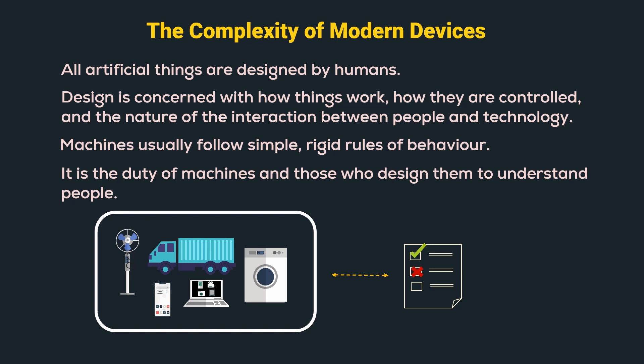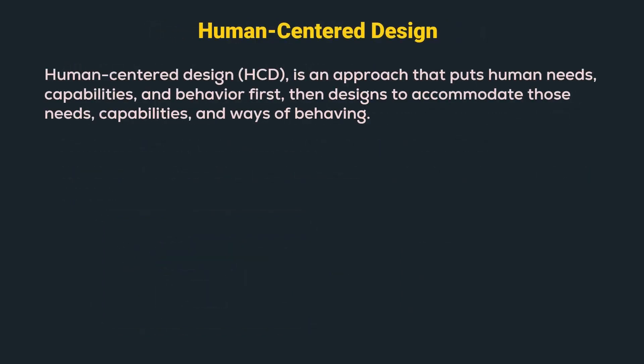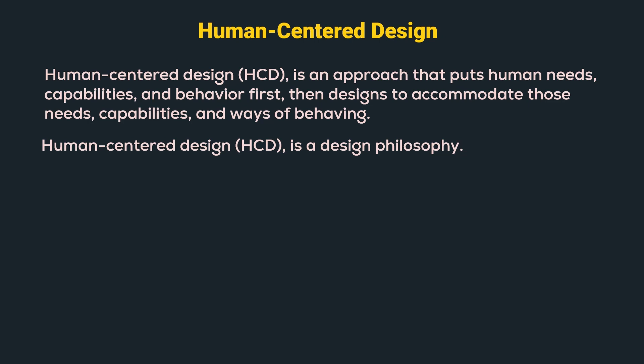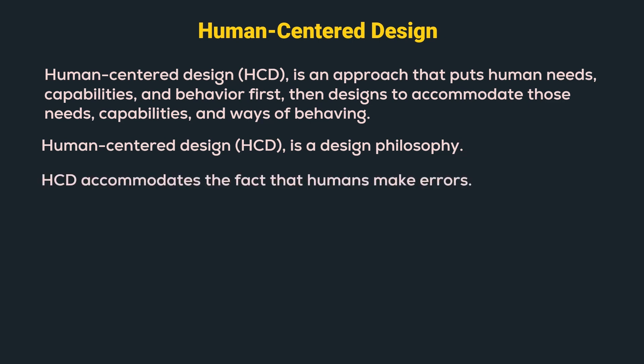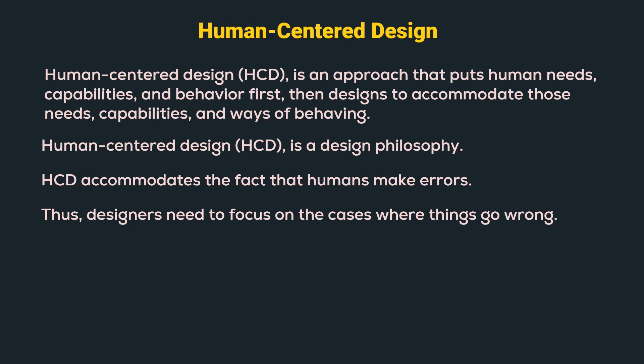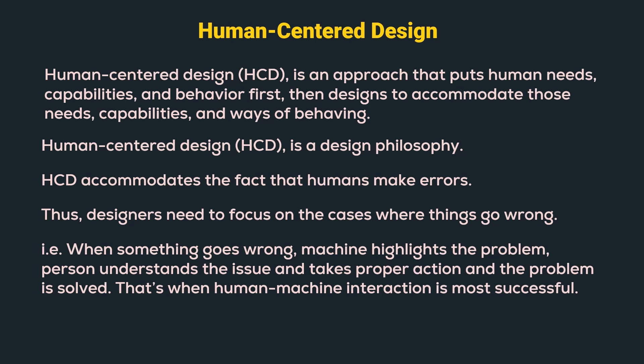Human-centered design, or HCD, is an approach that puts human needs, capabilities, and behavior first, and then designs to accommodate those needs, capabilities, and ways of behaving. Human-centered design is a design philosophy that applies across all stages of designing. HCD accommodates the fact that humans make errors. Hence, designers need to focus on the cases where things can go wrong. For example, when something goes wrong, the machine should highlight the problem, then the person understands the issue and takes proper action, and the problem is resolved. That's when human-machine interaction is the most useful.